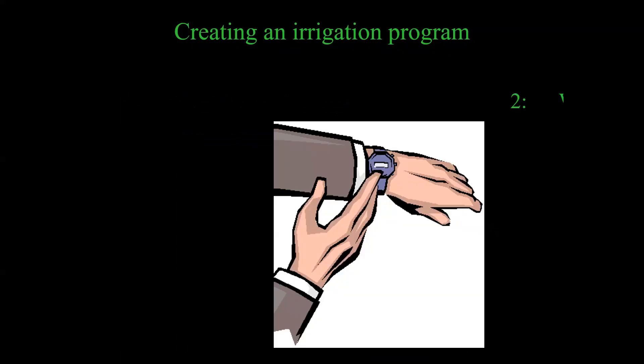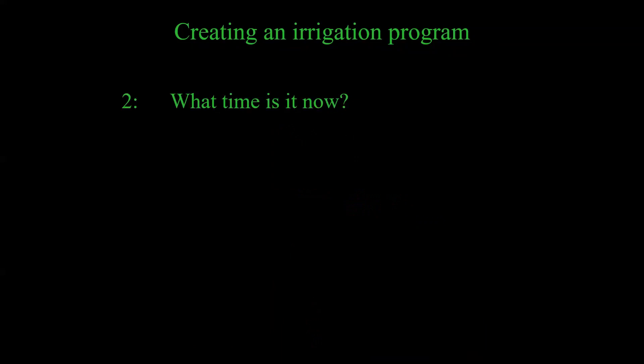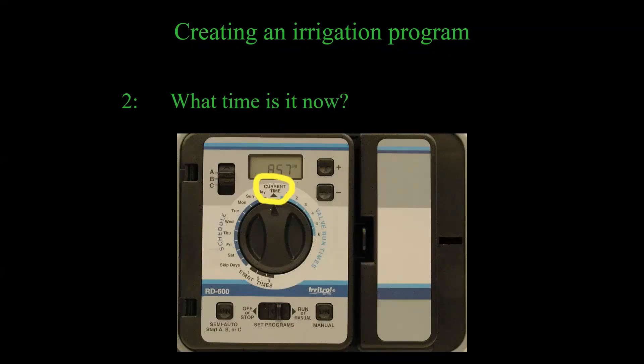The next thing the controller needs to know is what time it is now. You can enter this information in any order — I'm just going through the logical steps the controller goes through before it sends out that signal to start watering. On this timer, I put the dial up to where it says 'current time.' My controller has the battery in and thinks it's 1:11 AM, so I'll use the minus button and hold it down. I set it to 6:15 PM, using the plus and minus buttons until the display shows the correct time.